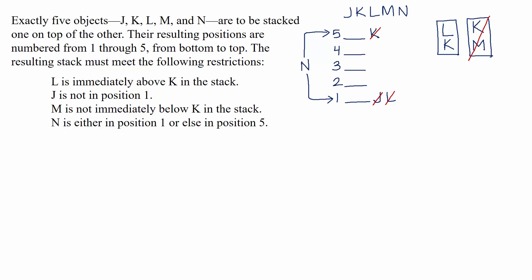To recap, we just set up an ordering task using dashes for the spots. We noted some rules off to the side and some directly in the diagram, and we made one deduction based on rule one. Even though we don't know where any of the objects go for sure, we're in a really good position to move to the questions because we have an initial diagram for support and a solid understanding of the rules. Some questions will give us extra information allowing more deductions, so don't worry if you finish a setup without any spots determined. Have confidence that you've made the deductions you can, and now move to the questions.